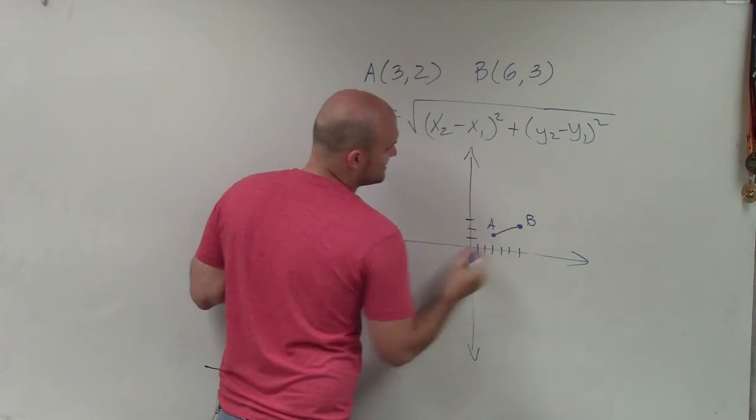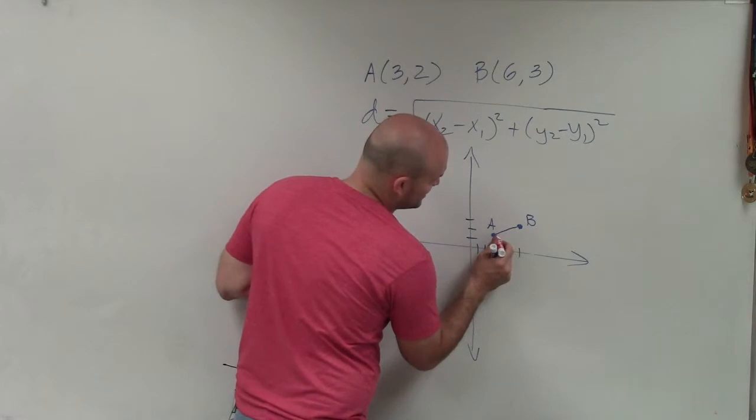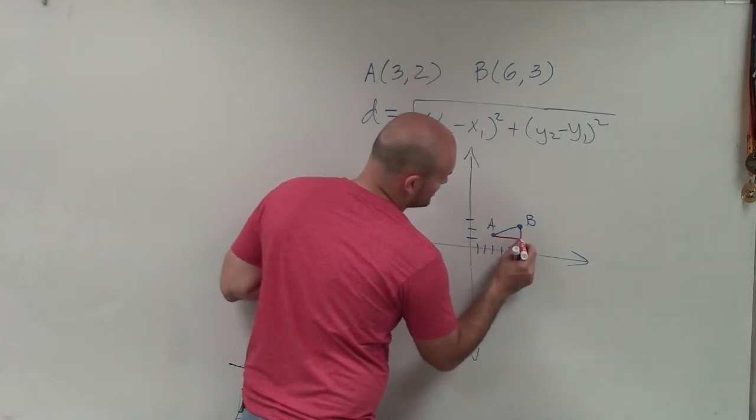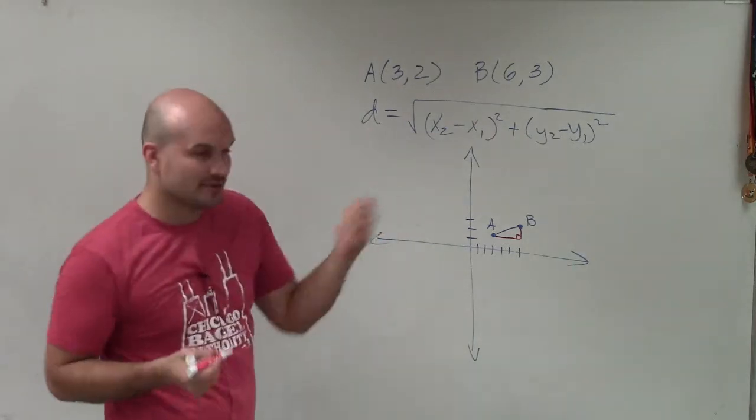So what we're trying to do is find this distance right here. And what we want to do is find the change in the distances of the y's and the change of the distances of the x's. And then we're going to use the Pythagorean theorem to find the hypotenuse.